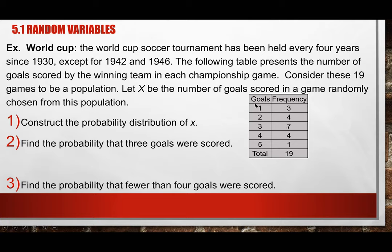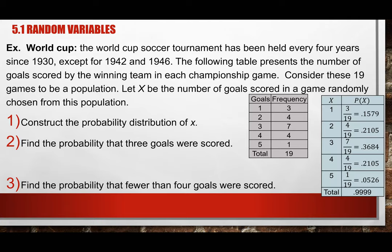To construct the probability distribution — which is the same as finding the relative frequency from chapter 3 — take the frequency divided by the total. For 1 goal: 3 ÷ 19 = 0.1579. For 2 goals: 4 ÷ 19. For 3 goals: 7 ÷ 19 = 0.3684. For 4 goals: 4 ÷ 19. For 5 goals: 1 ÷ 19. Relative frequency and probability are the same thing, just different terminology.